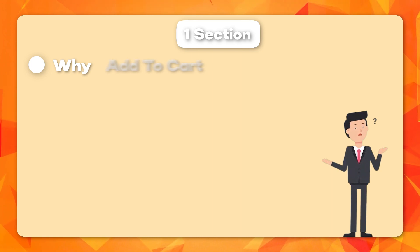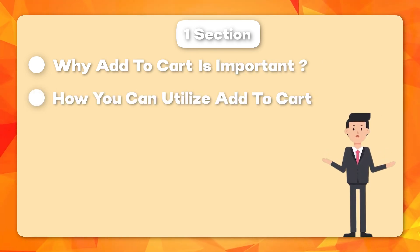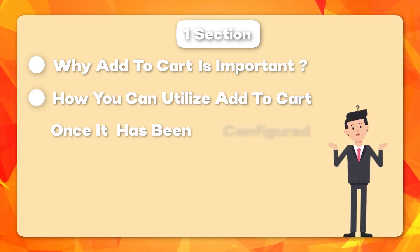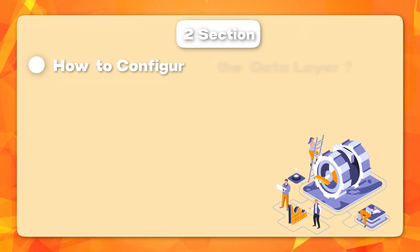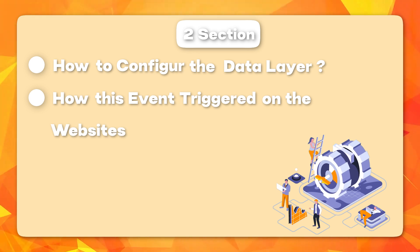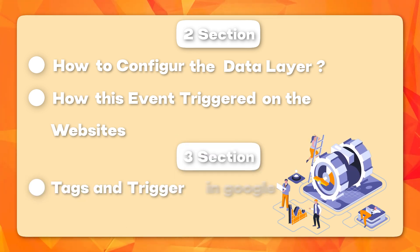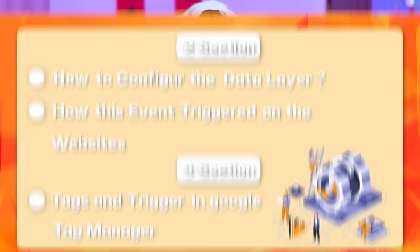This video has been divided into four different sections. In the first section, we are going to see why Add to Cart is important and how you can utilize the Add to Cart event once it has been configured on your website. In the second section, we will see how to configure the data layer and how this event is triggered. In the third section, we will create tags and triggers in Google Tag Manager to track this event with e-commerce information back to Google Analytics.